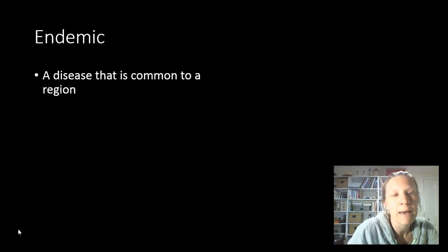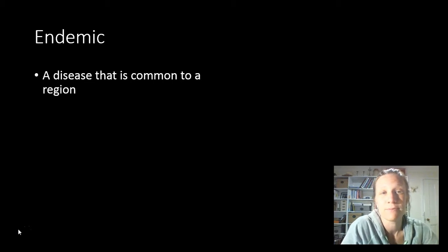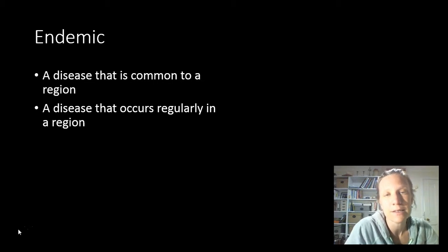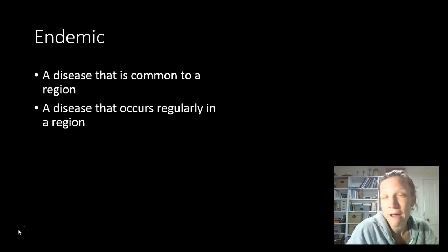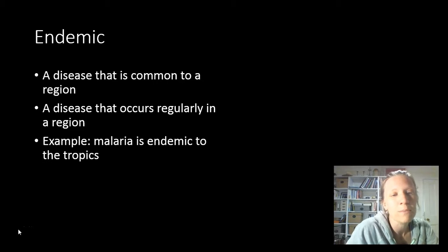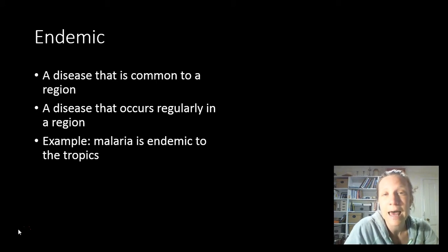Our first term is endemic. A disease that is endemic is a disease that is common to a particular region — that means a disease that occurs regularly in that region. You've heard me use this term before when we were discussing malaria, and that is because malaria is an example of a disease that is endemic to the tropics.